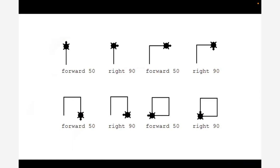Seymour Papert and his team created the first block-based coding language called Logo around 1968 — the first coding language used in schools. It wasn't a tool to learn to code; it was a tool to code to learn in 2D geometry. Hypothetically now, I'm going to paint or tape an equilateral triangle on the floor of my classroom, and I'm going to have students walk that triangle and use their STEPS as a unit of measure. There's a reason STEPS is the unit of measure in the Scratch platform.